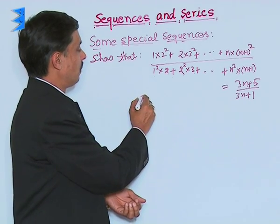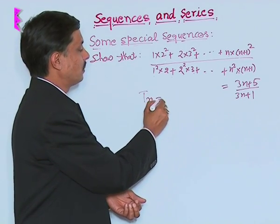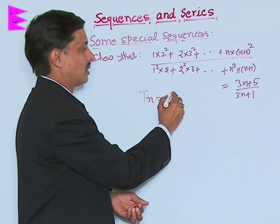We will first find its general term T_n 1, 2 and last term is n.